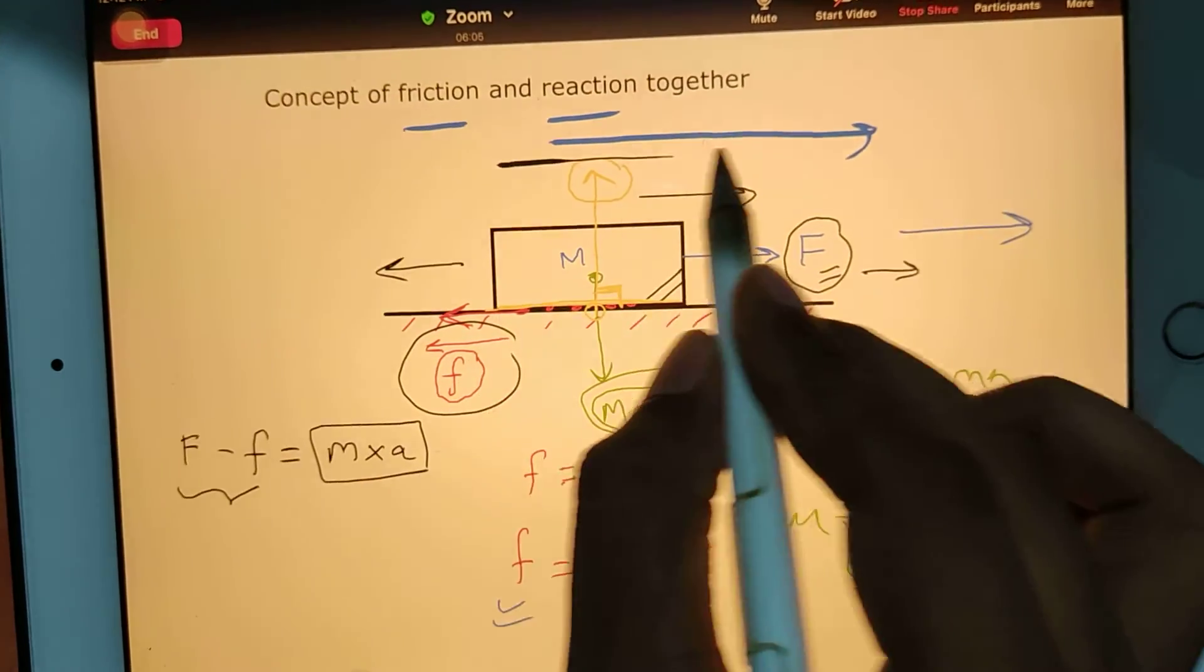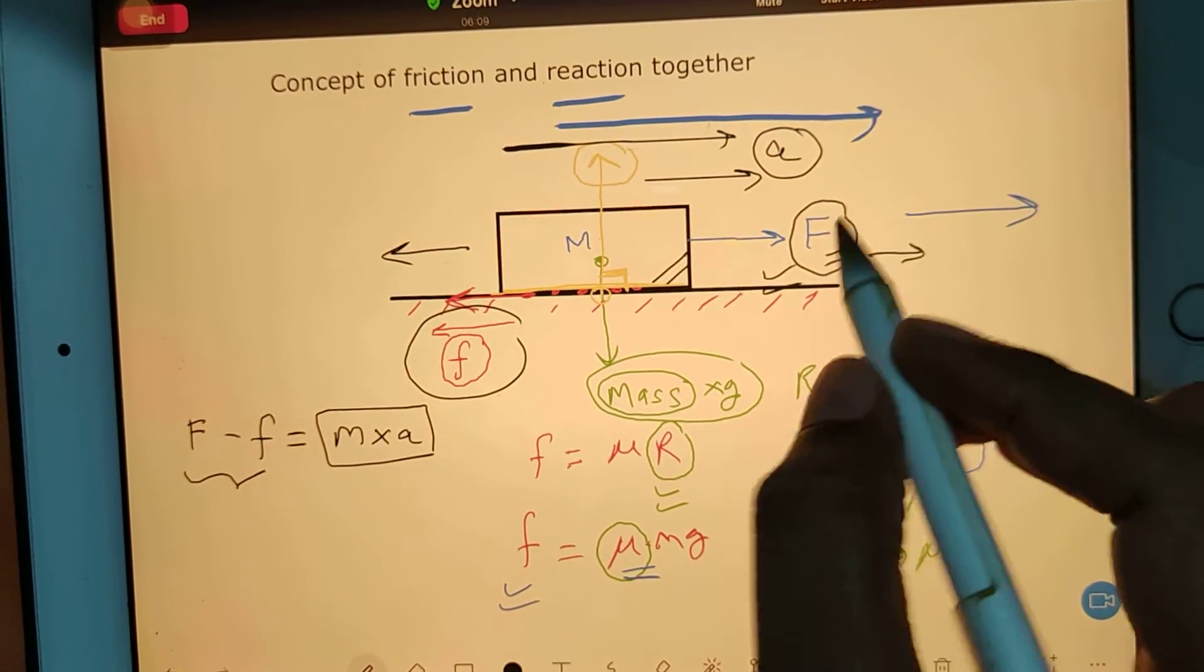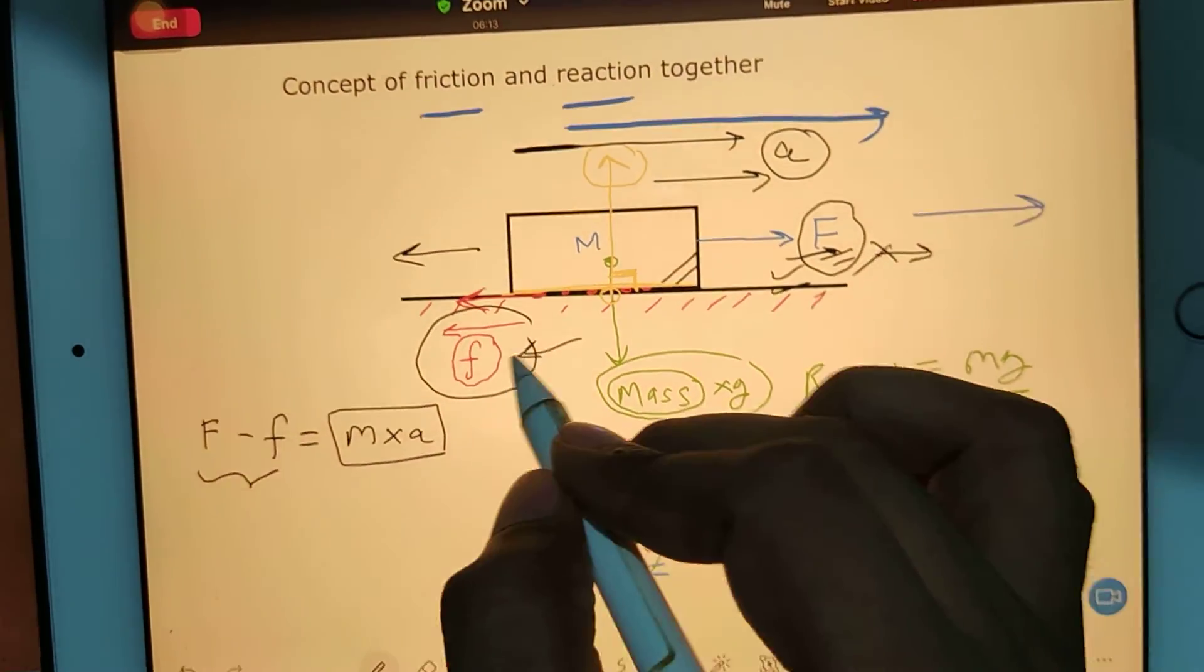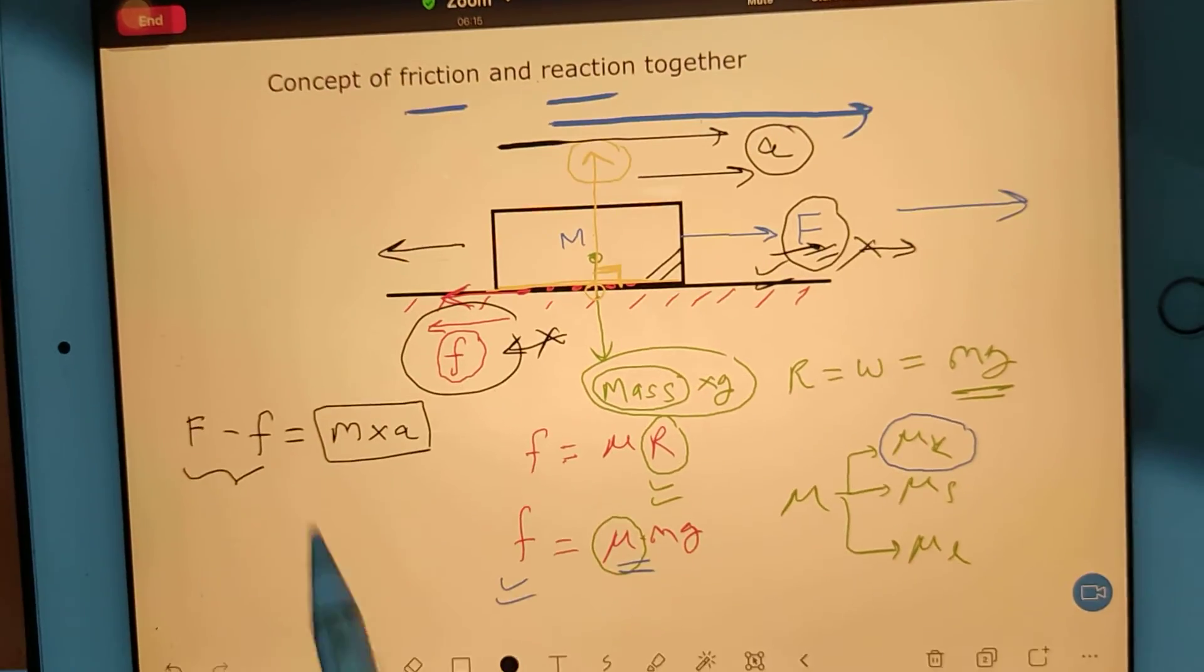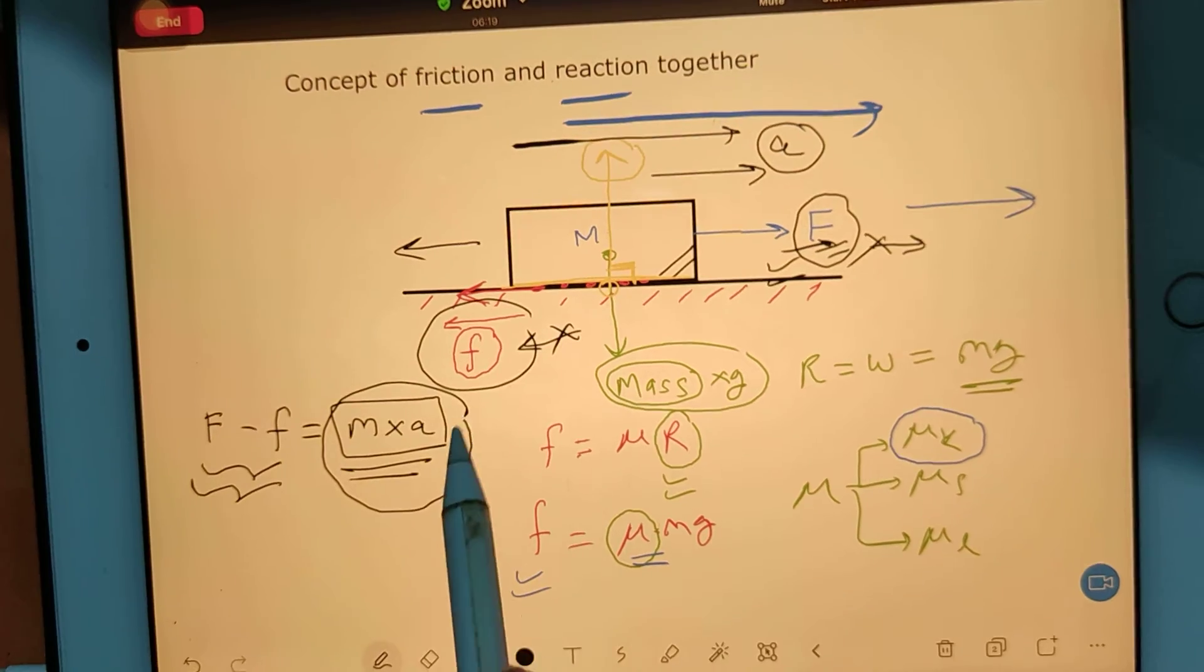If the mass is moving in this direction, it will have certain acceleration because it has resultant force on it. This force is the applied force, this is the friction force - they both will tackle each other and will have a certain amount of resultant force. So this force is responsible to accelerate the block with an acceleration.